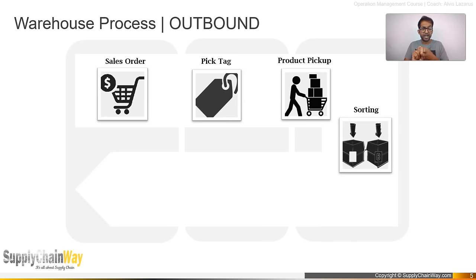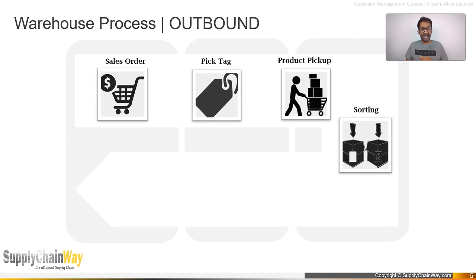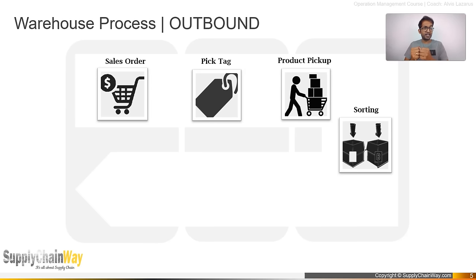In order-based picking, a single order is picked completely — no sorting is needed afterward. In batch picking, all orders within a cutoff window are grouped and pickers pick one category of product for all orders. For example, in a home appliances warehouse: if one order has a refrigerator and a TV, an order-based picker retrieves both items before completing the order. Most cases don't work this way.